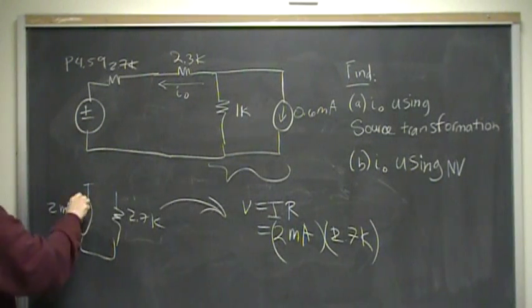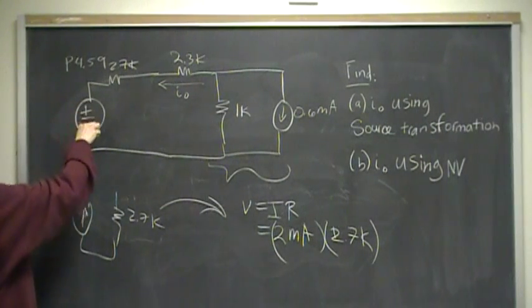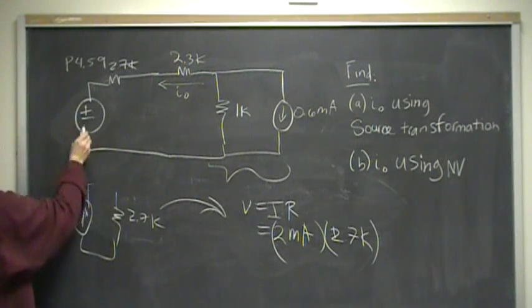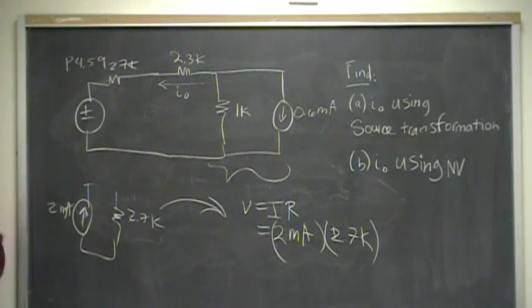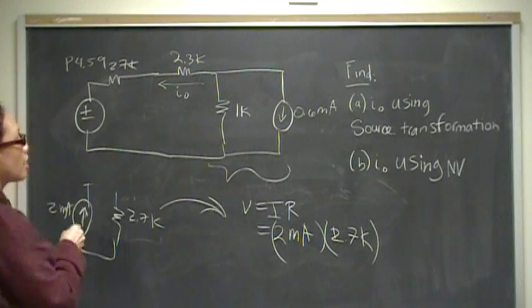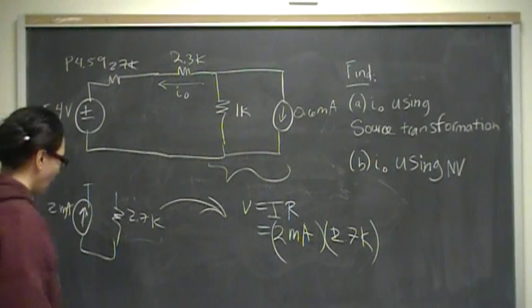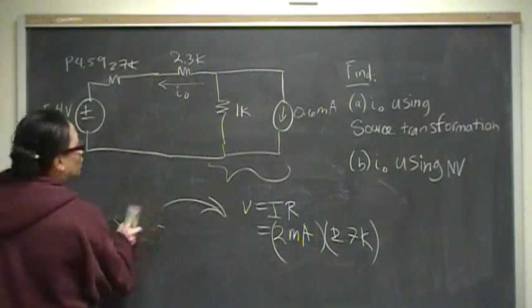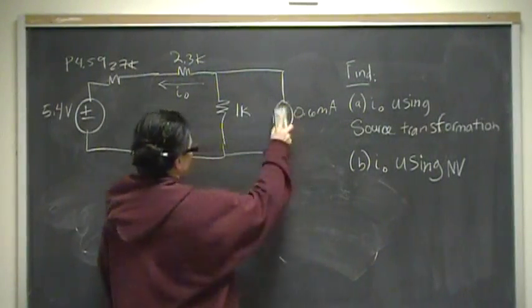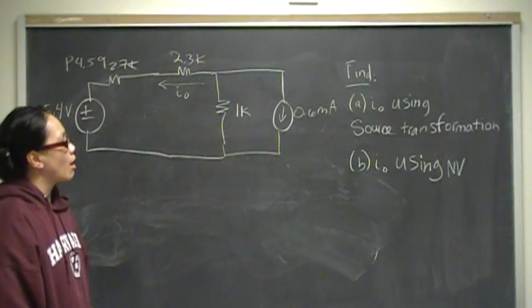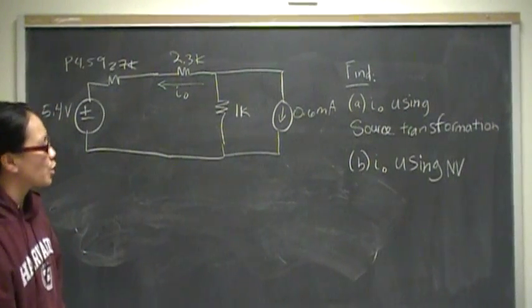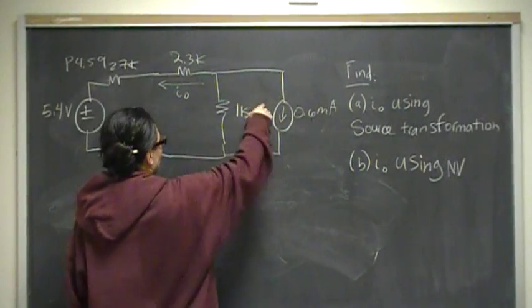My arrow, my current went this way, so the head of the voltage source - when the current is going up you're increasing in potential. That's why the polarity of your voltage source is also in an increasing direction. Over here we have this one to transform - that's 1k in parallel with the 0.6 milliamp. The kilos and the millis cancel each other out, so it's just 1 times 0.6, and that's 0.6 volts. Our potential is increasing in this direction, so we're going to go minus to plus.